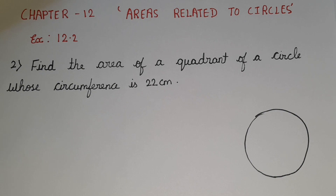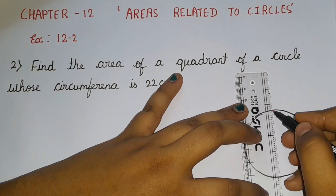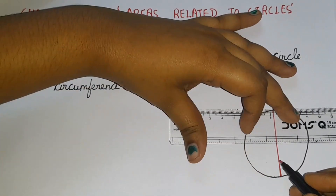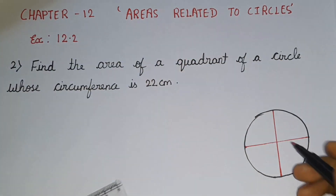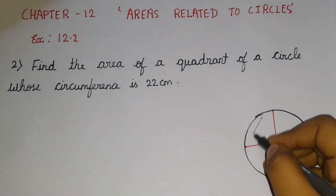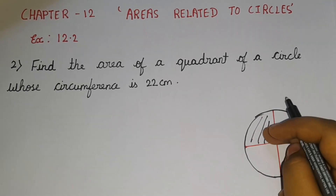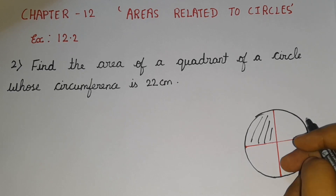So here, what is the meaning of quadrant? Quadrant means — if I just draw a line here and another line like this, then we call this portion — this particular portion — as quadrant. So this portion as quadrant.